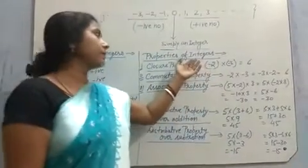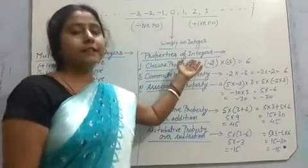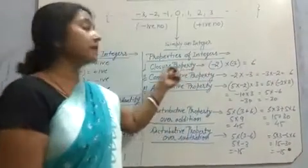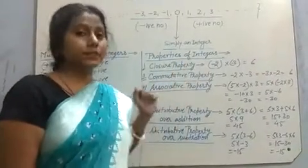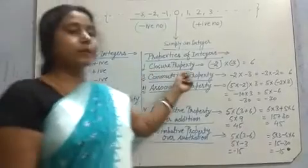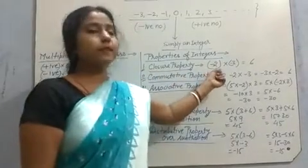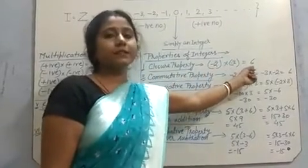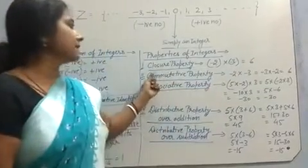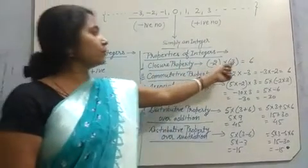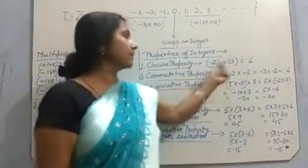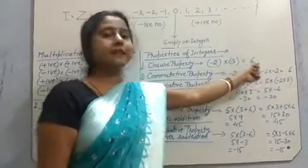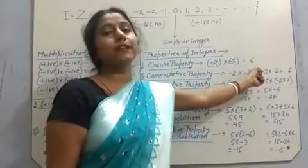Now the properties of integers over multiplication. The first is the closure property. If we multiply two integers it gives only one integer. For example, minus 2 multiplied by minus 3 gives 6. Minus 2 is an integer, minus 3 is an integer, and 6 is also an integer.